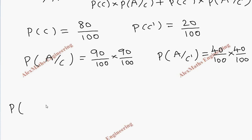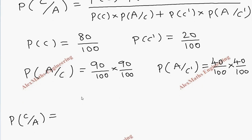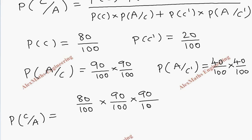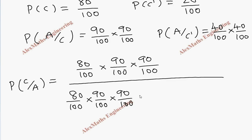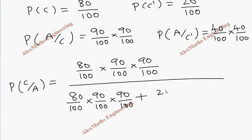Now let's substitute in the formula. What we are going to find is P of C given A. So we substitute: P of C which is 80 by 100, into P of A given C which is 90 by 100 into 90 by 100 — whole divided by the same plus P of C dash which is 20 by 100, into P of A given C dash which is 40 by 100 into 40 by 100.